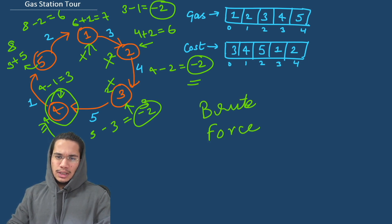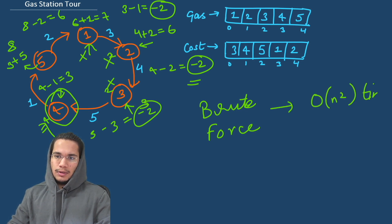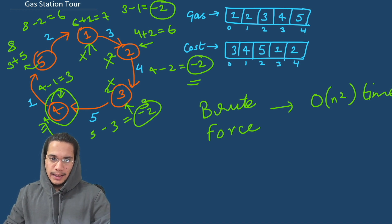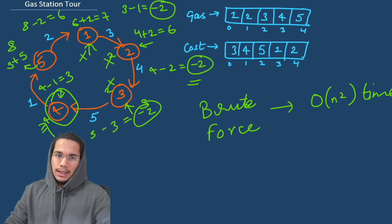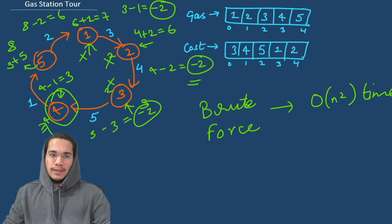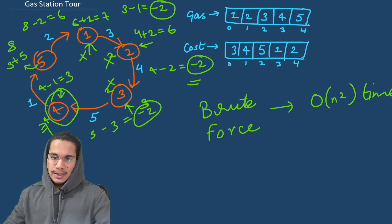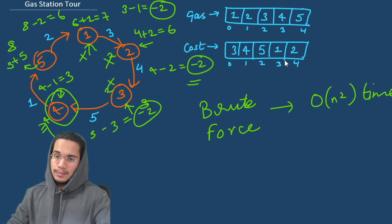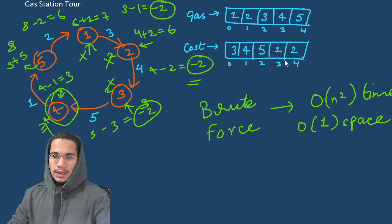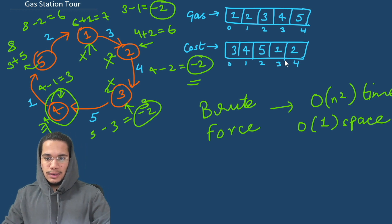This is a naive approach and takes O(n²) time. Essentially what we do is consider every petrol pump as a potential starting point — in the first loop we iterate through all pumps to pick the starting point, and in the next loop we move through all pumps ahead of it to verify we can complete the circuit. In terms of space, this is constant because we are not using any auxiliary container, so this is an O(n²) time and O(1) space solution.